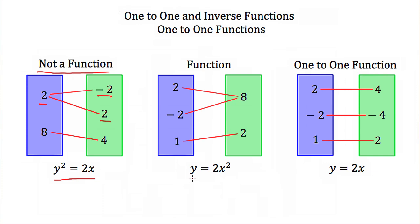Here we do have a function: y = 2x². But this is not a one-to-one function because x = 2 and x = -2 both give a y value of 8. This is still a function because each x value only equals one y value, but it's not one-to-one because two x values equal the same y value.